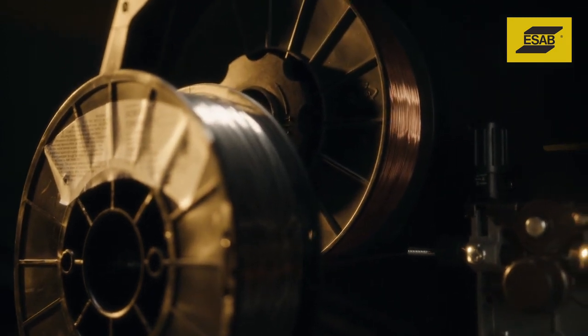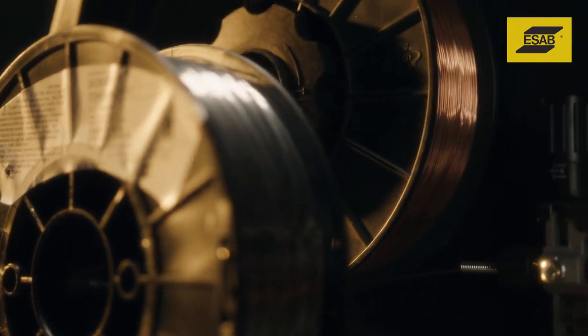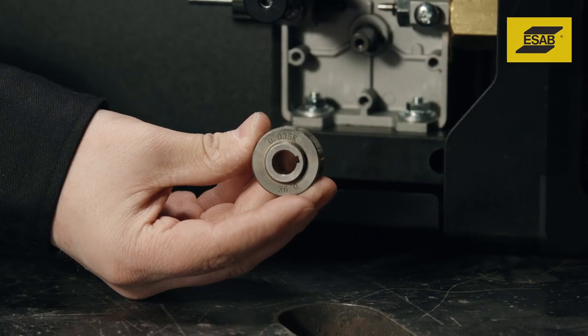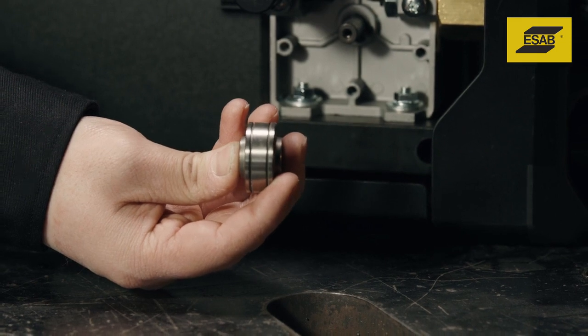To weld with flux cord wires, use knurled groove feed rolls, which provide a better grip on the wire with less feed roll pressure. A dual-groove feed roll allows you to flip the feed roll over to use two different diameter wires.